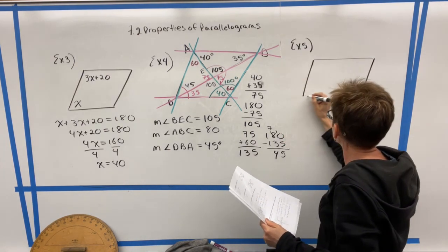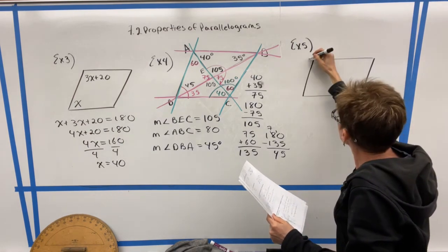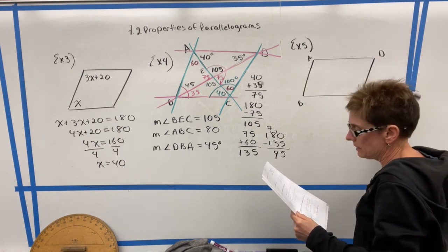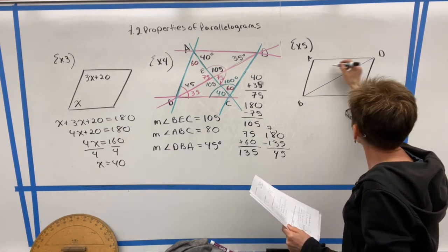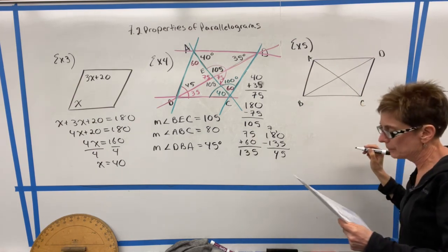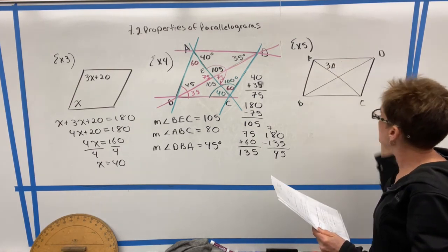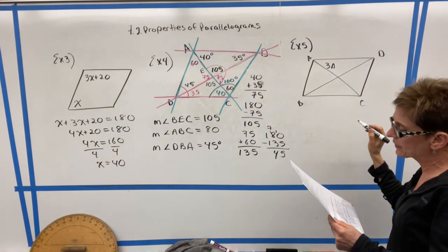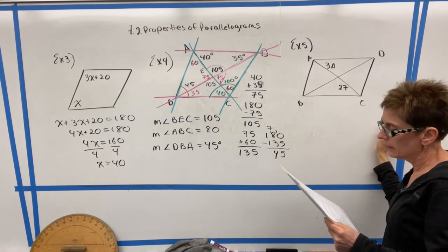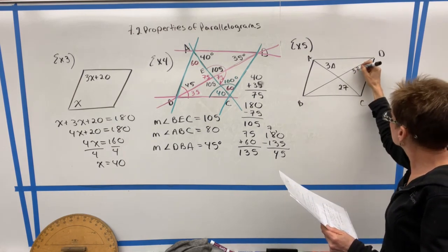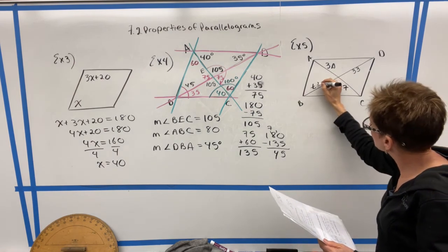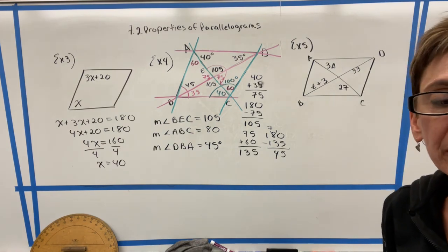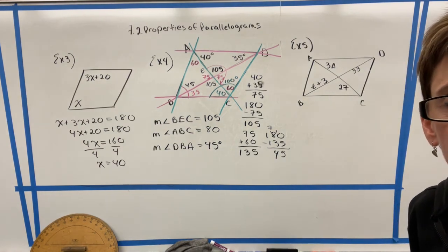In example number five, the question relates to the diagonals of the parallelogram. So we've got parallelogram A, B, C, D. And the question is to find the value of S and T. So as you guys know, I'm horrible at drawing S's. So I'm going to make my S look like that. That's three S there. This is 27. This part of the diagonal is 33. And this part is T plus three. Now, if you look back at your notes for the properties of a parallelogram, what does it say about the diagonals?